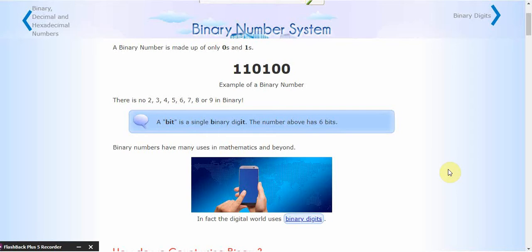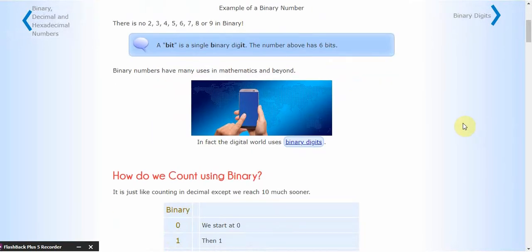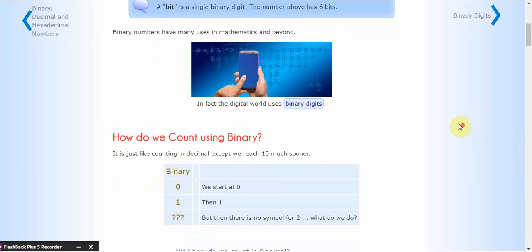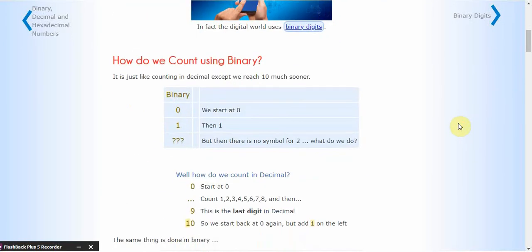Before we do that, we have to make sure we understand the binary number system. Binary numbers are numbers made up of zeros and ones. This number here has six bits in it — six binary numbers. Note that there are no twos, threes, fours, or fives. It's only ones and zeros. Binary numbers are used in computer systems and in computer programming, so it's important we understand how this works.